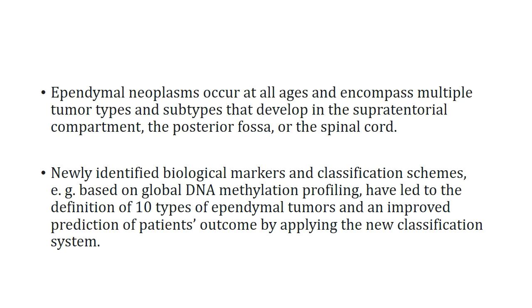Ependymal neoplasms occur at all ages and encompass multiple tumor types and subtypes. They typically develop in the supratentorial compartment, posterior fossa, or spinal cord. Newly identified biological markers and classification schemes based on characteristic DNA global methylation profiling have led to the definition of 10 types of ependymomas and an improved prediction of patient outcome.